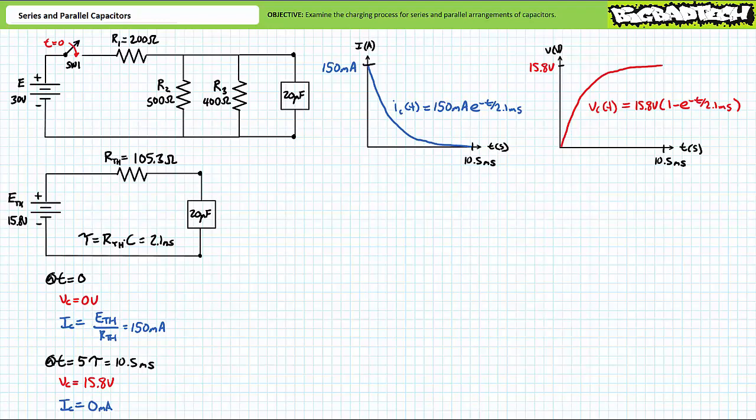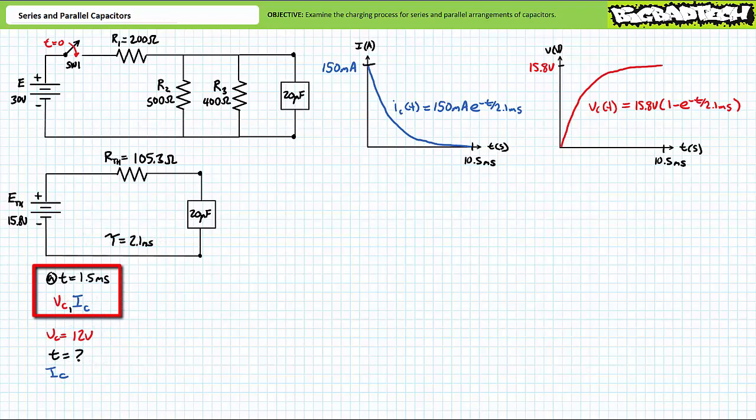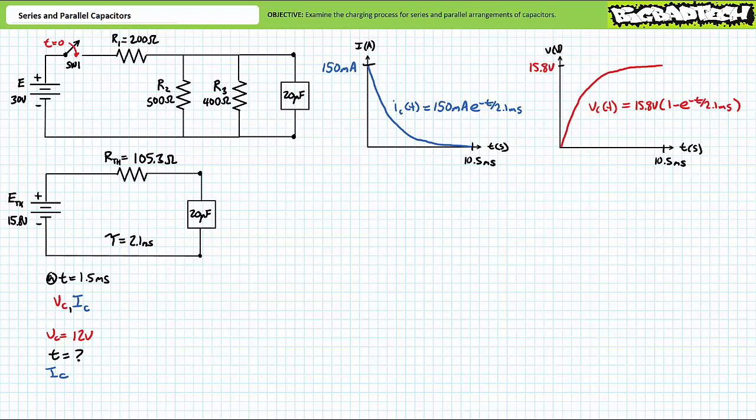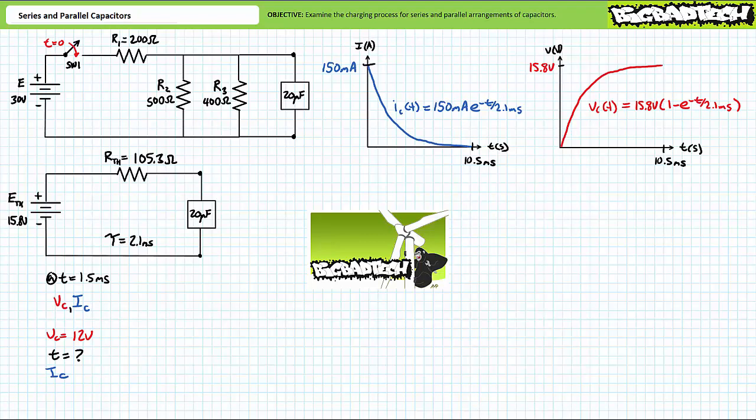Using these plots and time-variant expressions, one could solve for electrical properties at specific times. As an exercise, solve for the instantaneous voltage and current at t equals 1.5 milliseconds, just before one time constant. Also solve for the time when voltage across the capacitor reaches 12 volts and the instantaneous current at that time. From this point forward, I will not be detailing algebraic processes to obtain these results. If you're struggling, revisit the exponential functions lecture at the Big Bad Tech channel.